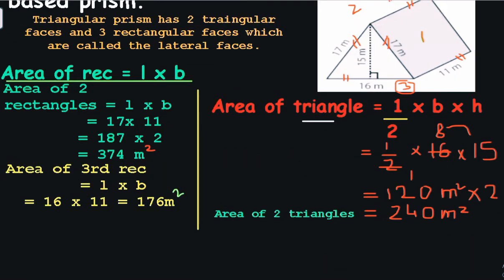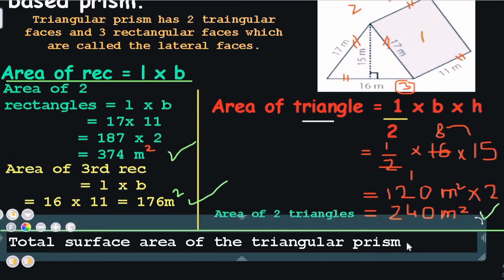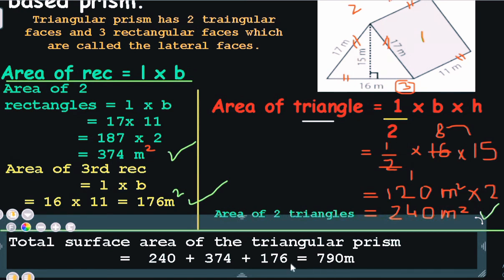Now comes the very important part — finding the total surface area of this triangular based prism. I am going to take the area of all 5 faces that I have calculated and add all of them. So the total surface area of the triangular prism equals 240 plus 374 plus 176, which equals 790 square meters. And this is my answer.